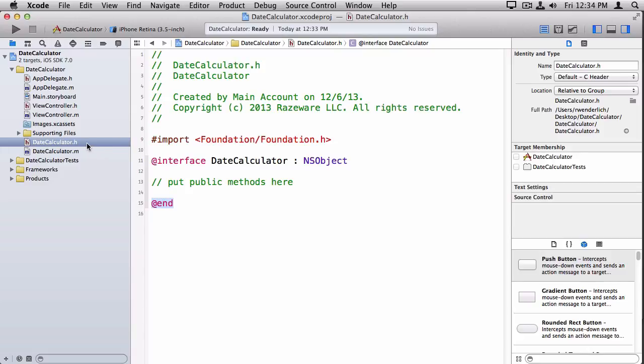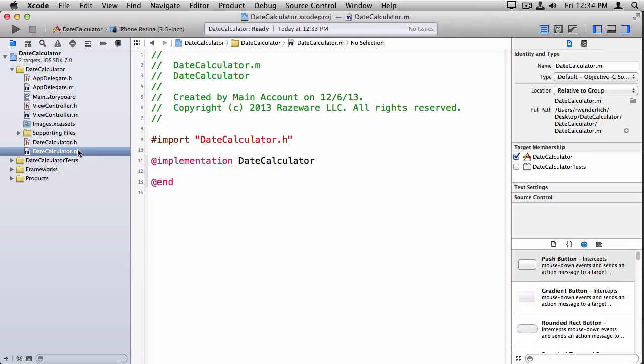So think of the header file as basically broadcasting what methods are available inside your class. When you actually want to implement them, you put them in the .m. So I switch to that. The first thing you do is typically import the header file. Then you say @implementation, the name of your class. And inside here, this is where you're going to implement the methods.